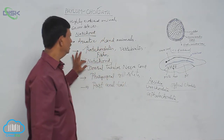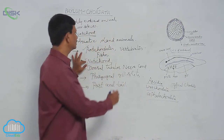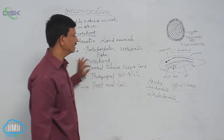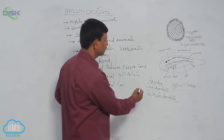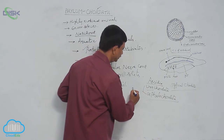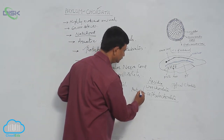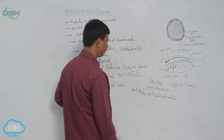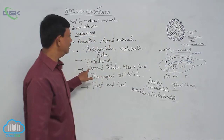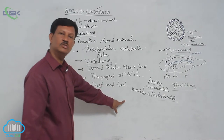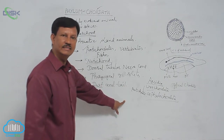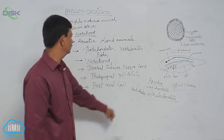In Cephalochordata, notochord is not replaced by the vertebral column. These two groups are known as Protochordata; they are primitive chordates. In some animals, for example cyclostomes, notochord is also possessed and it is not replaced into the vertebral column.